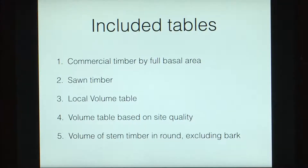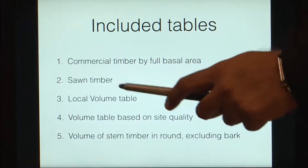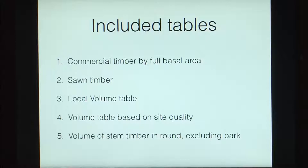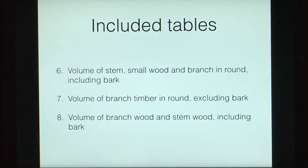You can have a local volume table, which gives values for a given locality rather than a generalized value. For example, for the forests of Dehradun, a small area like Timli forest might have very similar values, so you can derive a local volume table for that. You can also have volume tables based on site quality, which tells you how fertile a site is. You can have volume of stem timber in round excluding bark, or including bark, or volume of stem small wood and branches.